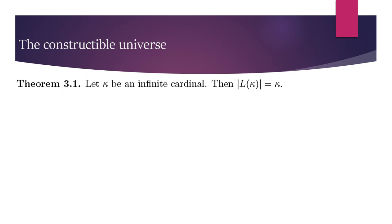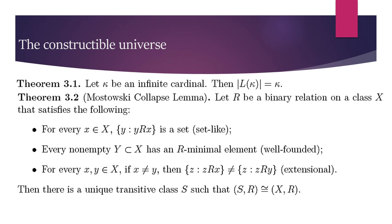Theorem 3.1: Let kappa be an infinite cardinal. Then the cardinality of L(κ) is equal to kappa. Theorem 3.2 — Mostowski Collapse Lemma: Let R be a binary relation on a class X satisfying the following: for every x ∈ X, the set {y : yRx} is a set; every non-empty Y ⊆ X has an R-minimal element; and for every x, y ∈ X, if x ≠ y, then {z : zRx} ≠ {z : zRy}. Then there is a unique transitive class S such that (S, R) is isomorphic to (X, R).